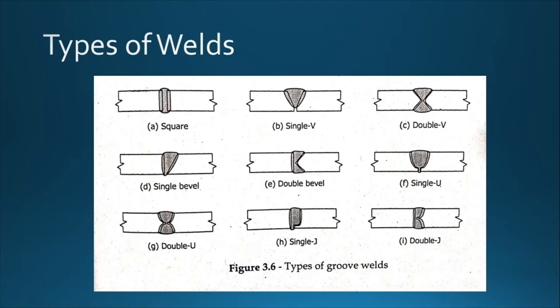The third type of weld is the groove weld. In groove welds, part of the material is cut away or carved out to create a groove. There are different groove configurations: single V, double V, and others where the groove is located in between the plates.